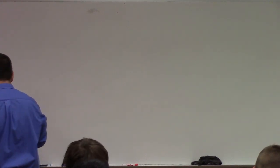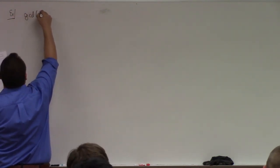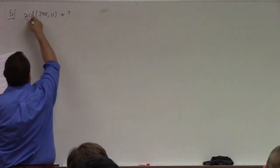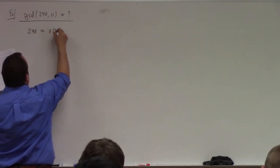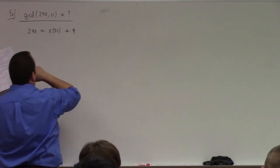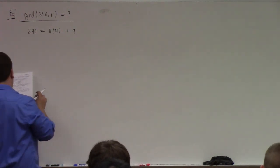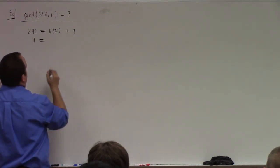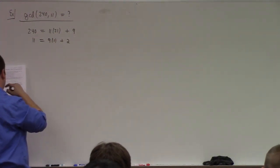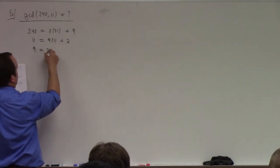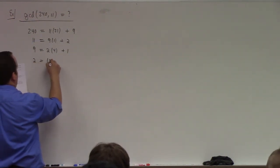I feel I owe you a second example. Find the GCD of 240 and 11. First: 240 is equal to 11 times 21 plus 9 — 11 times 21 is 231, plus 9 is 240. Then: 11 is equal to 9 times 1 plus 2. Then: 9 is equal to 2 times 4 plus 1. Finally: 2 is equal to 1 times 2.